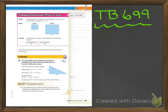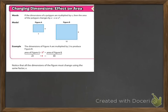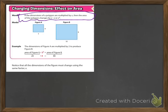Now we're going to look at what changes in dimensions do to the area. For this first problem, you'll see a rectangle. Up at the top where it has the rule, it says: if the dimensions of the polygon are multiplied by x, then the area of the polygon changes by x times x, or x squared. That rule is a little different and more tricky, so let's dive into it.